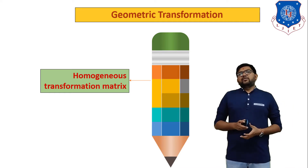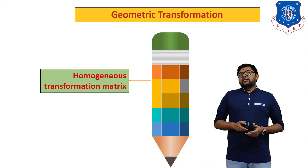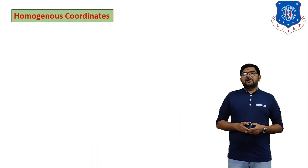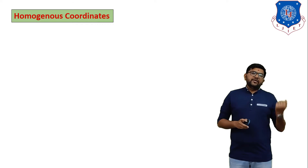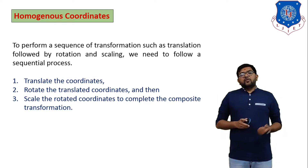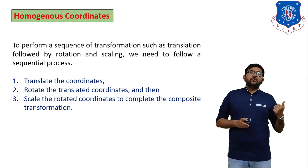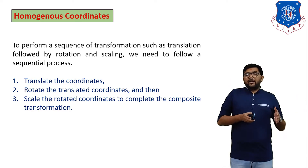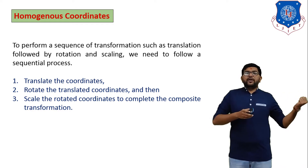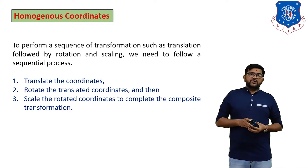In today's session we start one new topic: the homogeneous transformation matrix. We will discuss what it is and derive its equation. To perform a sequence of transformations such as translation followed by rotation and scaling, we need to follow a sequential process. If we want to apply multiple geometric transformations on any one object, we have to use the homogeneous transformation matrix.